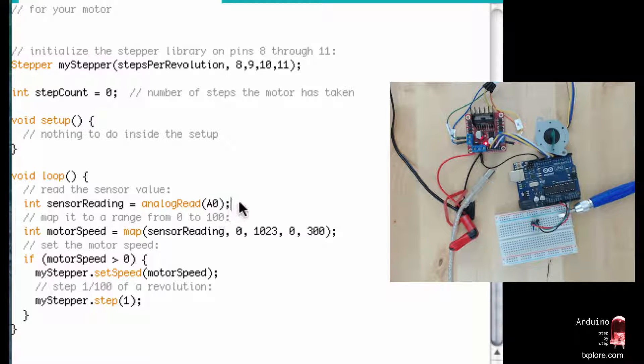And then in the loop we grab a reading from analog pin 0. Then because of the motor is different, as you remember in the first demo, by doing trial and error, I determined that the top speed of my motor is 300.